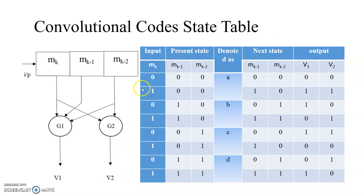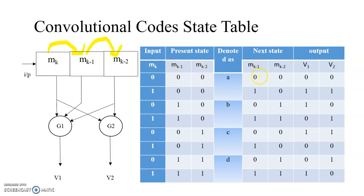Here we have the state table. I have described this state table in detail in the video of convolution encoder. I will quickly revise this. We have Mk as the input, Mk minus 1 and Mk minus 2 as the states. To find out the next state, we pass the contents of Mk to Mk minus 1, and Mk minus 1 contents go to Mk minus 2. The output uses mod2 addition, which we call XOR.